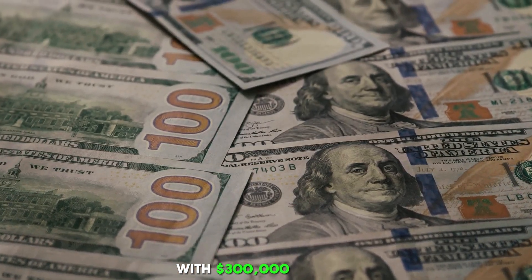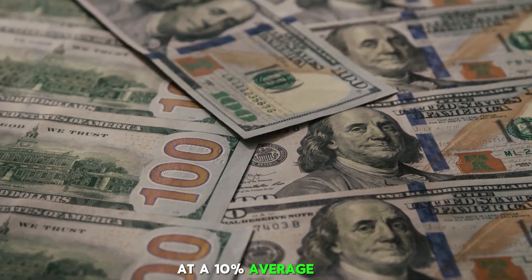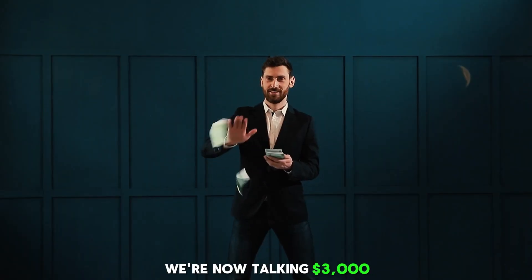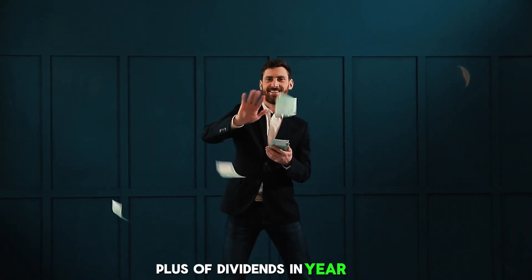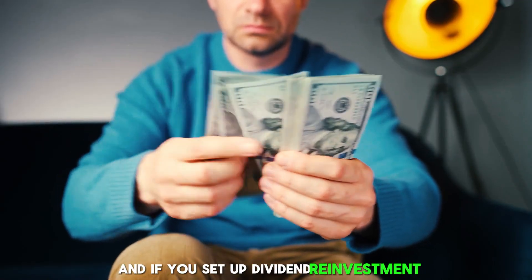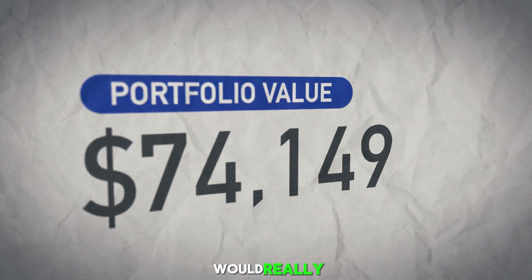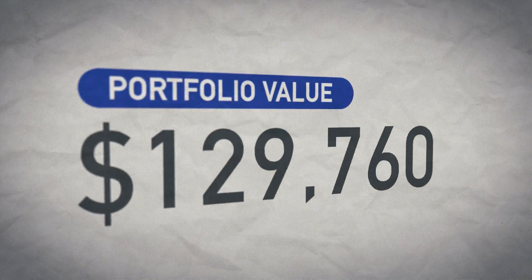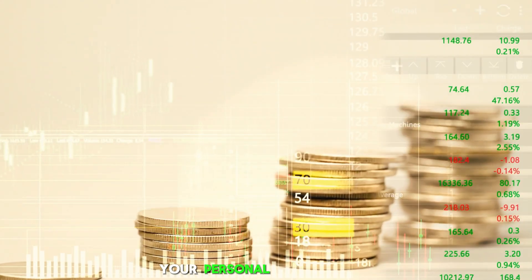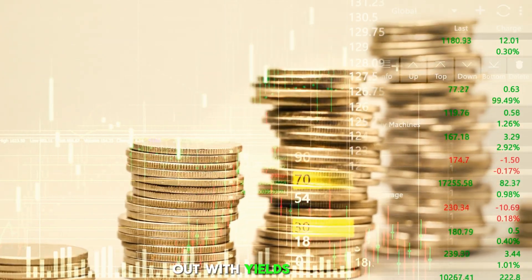With $300,000 invested at a 10% average yield, we're now talking $3,000-plus of dividends in year one. And if you set up dividend reinvestment like before, your income stream and total portfolio value would really start to snowball over time. Just imagine how fast you could reach your personal income goal if starting out with yields this high.